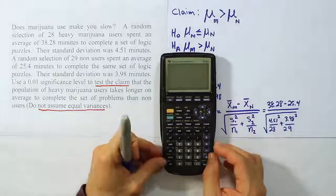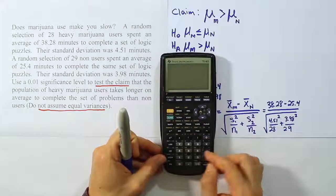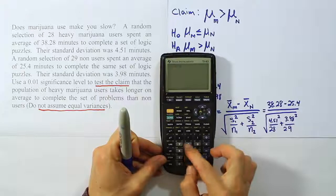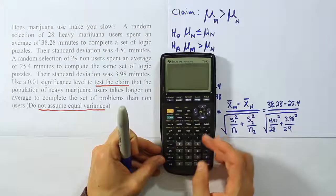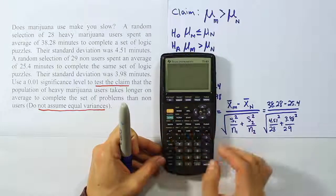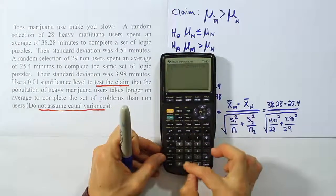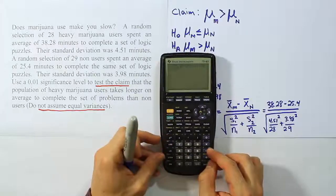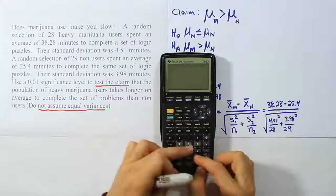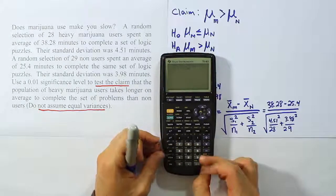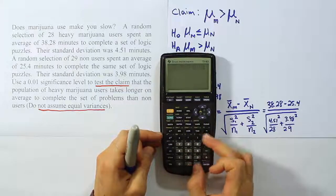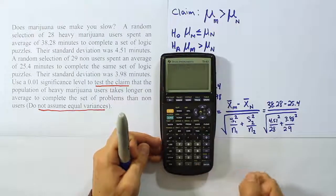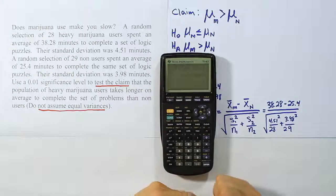Let's do the calculation with our calculator. In parentheses on top: 38.28 minus 25.4, close parentheses, divide by the square root of 4.51 squared divided by 28, plus 3.98 squared divided by 29. Close up the parentheses, hit enter, and we end up with a very large test stat: 11.42.